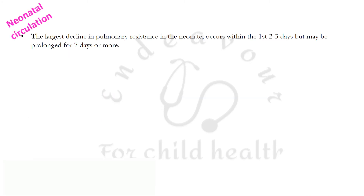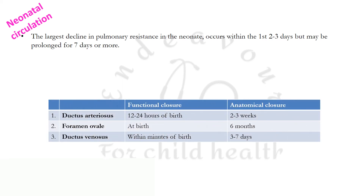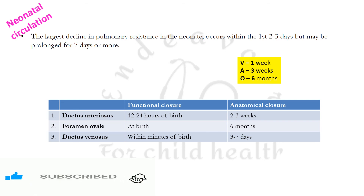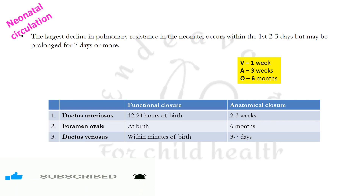The largest decline in pulmonary vascular resistance occurs within the first two to three days but may be prolonged for seven or more days. If prolonged pathologically, it is referred to as persistent pulmonary hypertension of the newborn. Functional closure of the ductus arteriosus occurs at 12–24 hours of birth and anatomical closure by two to three weeks. Foramen ovale closes functionally at birth but anatomically by six months of age. Ductus venosus closes within minutes of birth with anatomical closure within three to seven days. A mnemonic to remember the order of closure is WOW — V (ductus venosus, ~1 week), A (ductus arteriosus, ~3 weeks), O (foramen ovale, ~3–6 months).